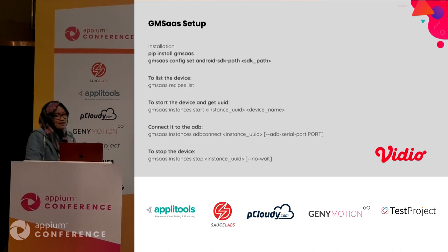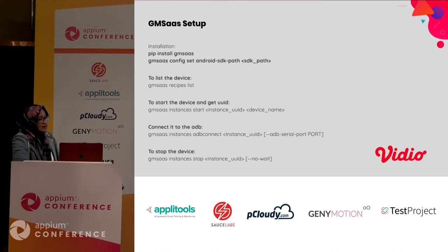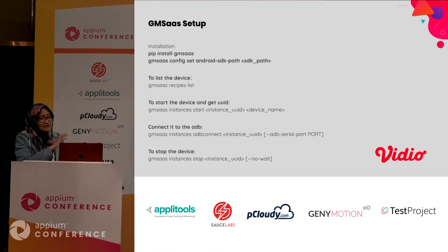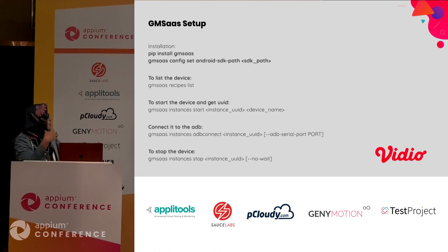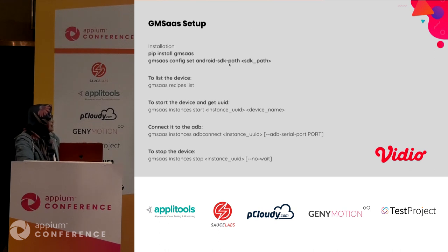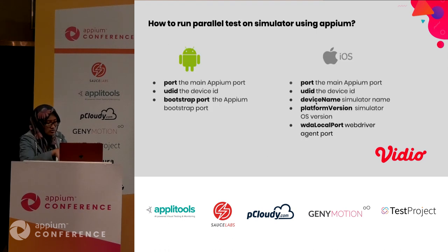Why do I say it's really easy? Because we don't have to install a desktop version. We just install it via a Python package using pip install GMSAS. We also set the SDK path so Genimotion can interact with ADB using the GMSAS config set Android command. We can list available devices using GMSAS recipe list, create device templates for Android, and share them to the cloud. For connecting to ADB, it uses GMSAS instance with ADB connect instance UID. To stop the device, we use the corresponding stop command.